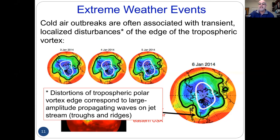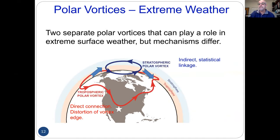You can equivalently say it's a large-scale wave propagating on the jet stream — troughs and ridges. The point is that there are two different polar vortices; they both play a role in weather events, but their mechanisms are different. Getting clear about which vortex you're talking about, and whether the linkage is direct or statistical, is important to make progress.